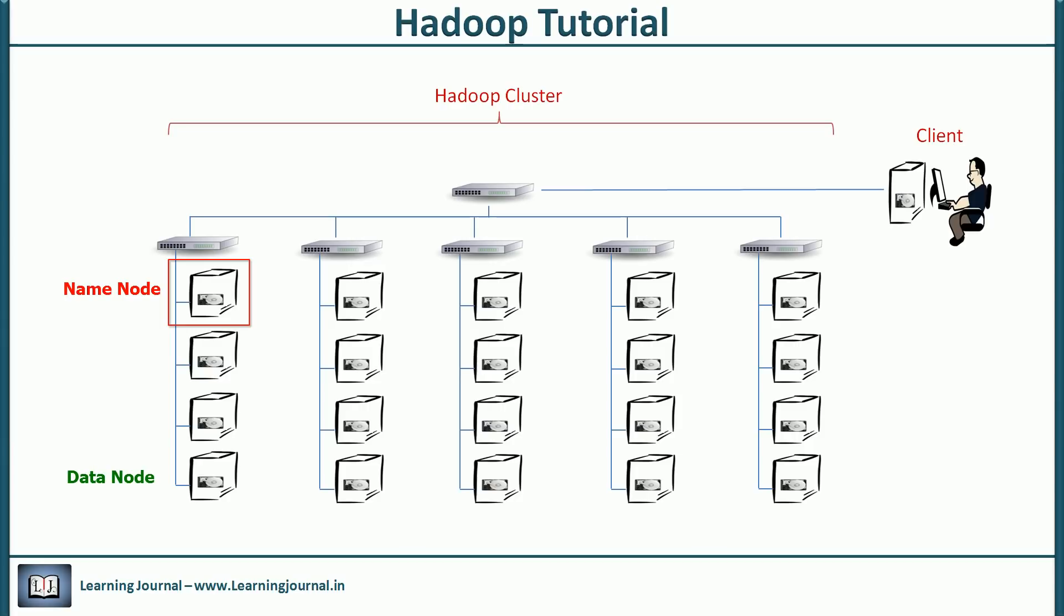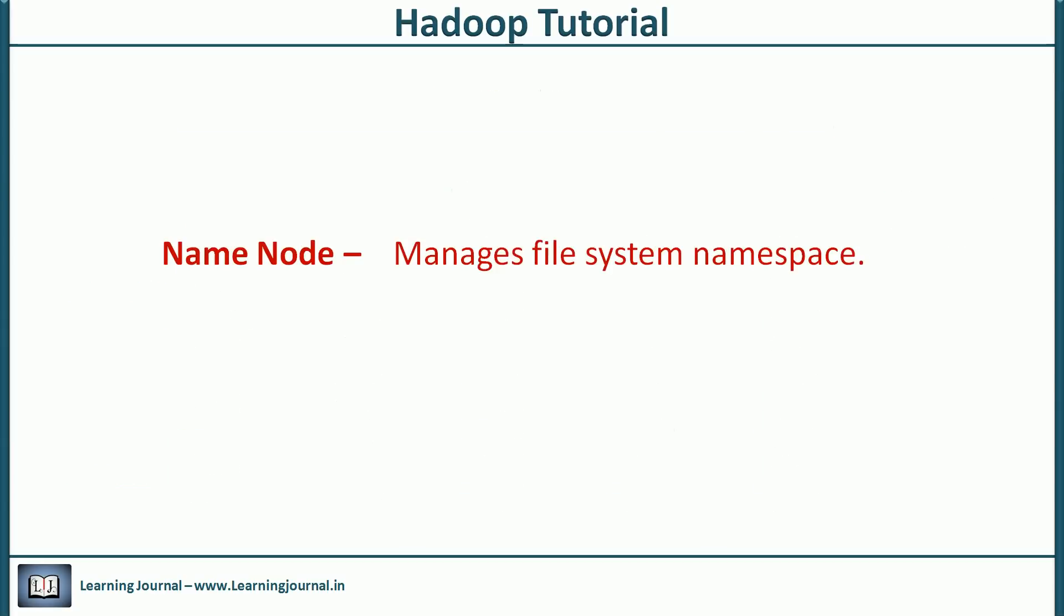One friend asked me an interesting question. Why we call it name node? Why not simply a master node or a super node or a king node? We call it name node because it stores and manages names. The names of directories and the names of files. The data node stores and manages the data of the file. So we call them data node.